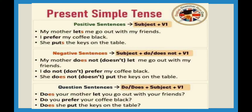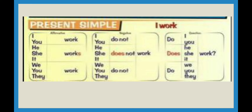When we make a question or interrogative sentence, we bring 'do' or 'does' to the front. The formula becomes: do/does plus subject plus V1. Remember, we use the root form of the verb. For example: Does your mother let you go out with your friends? Do you prefer your coffee black? With 'I' and 'you', the verb is without S — plural form. With 'he', 'she', 'it', or a singular noun, we use the singular verb with S. 'We', 'you', and 'they' are plural and take the plural verb.